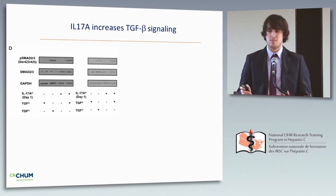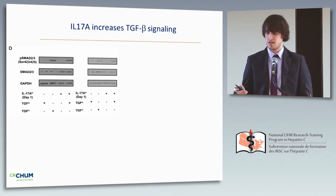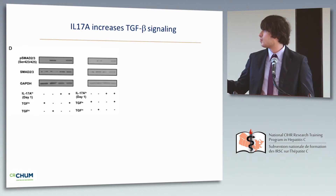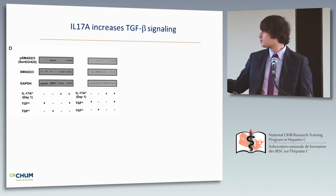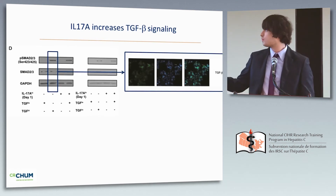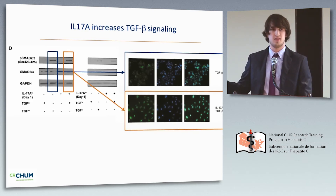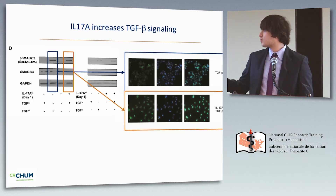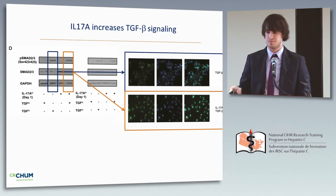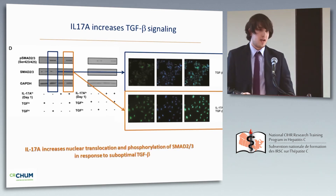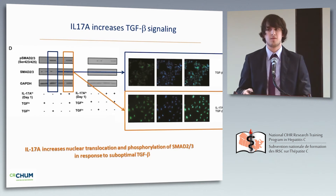This increase in TGF-beta receptor cell surface expression was linked to increased signaling. When cells were treated with suboptimal doses of TGF-beta, we did not observe significant phosphorylation of SMAD-2/3. But with high-dose TGF-beta, we observed strong phosphorylation of SMAD-2 and 3, mostly localized in the cytoplasm. Interestingly, when cells were stimulated with IL-17A followed by suboptimal doses of TGF-beta, we observed strong phosphorylation of SMAD-2 and 3 mostly localized in the nucleus. So IL-17A increases nuclear translocation and phosphorylation of SMAD-2 and 3.